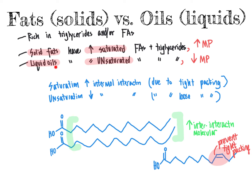Hence, liquid oils enriched in unsaturated fats have a much lower melting point than solid fats. We can observe this in our kitchen: typical animal fats are solid at room temperature, while liquid oils, typically derived from plants and enriched in unsaturated fats, remain as liquids instead.